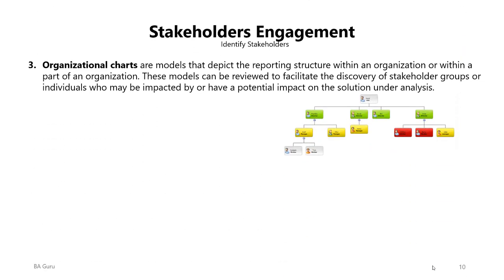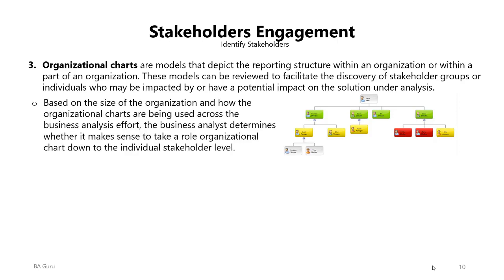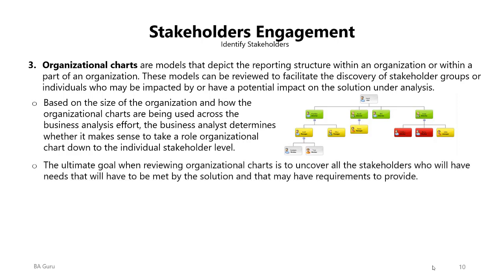The third tool is organizational charts — models that depict the reporting structure within an organization or part of an organization. These models can be reviewed to facilitate the discovery of stakeholder groups or individuals who may be impacted by or have a potential impact on the solution under analysis. The ultimate goal when reviewing organizational charts is to uncover all stakeholders who will have needs that must be met by the solution and may have requirements to provide.